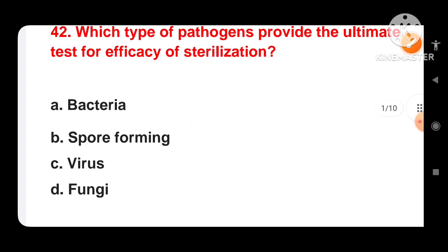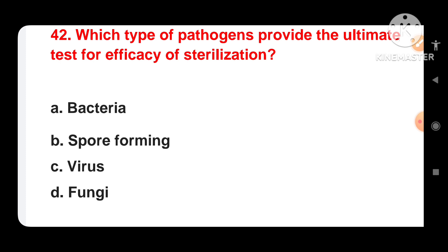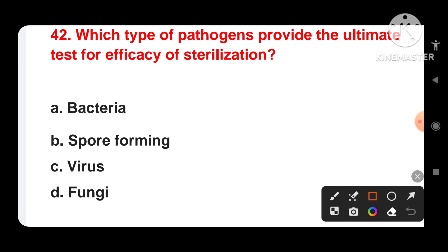Next question: which type of pathogen provides the ultimate test for efficacy of sterilization? Options are bacteria, spore-forming, virus, fungi. Spore-forming pathogens — particularly bacterial spores — are considered the ultimate test for the efficacy of the sterilization process. Spores are highly resistant to various environmental conditions including heat and chemical agents. Therefore, if a sterilization process can effectively eliminate spores, it is likely to be successful in eliminating other types of pathogens such as bacteria, viruses, and fungi. So the correct answer is spore-forming.